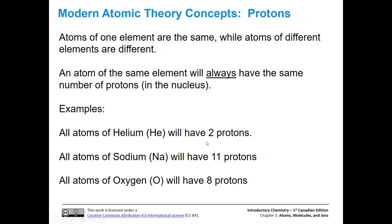Atoms of one element are the same, while atoms of different elements are different. What we're saying is that an atom of the same element will always have the same number of protons in the nucleus. A helium atom will always have two protons, a sodium atom will always have 11, and oxygen atoms will always have eight. That's what defines it as that particular atom.